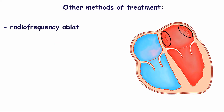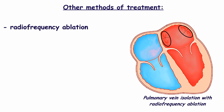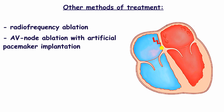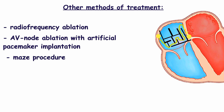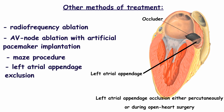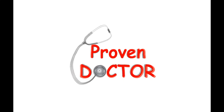Radiofrequency catheter ablation is a good alternative to pharmacological maintenance of sinus rhythm, where certain areas of atrial tissue are destroyed. Atrioventricular node ablation with following cardiac pacing is also rarely used. In the case of open-heart surgery, the MAZE procedure may be performed — it creates a labyrinth of passages through which the sinus node impulse finds a route to the atrioventricular node. Surgical left atrial appendage exclusion prevents blood clot formation and reduces the risk of stroke.